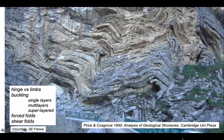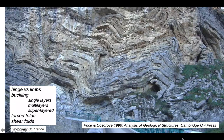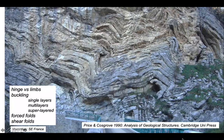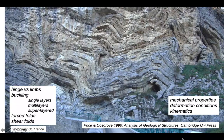So we've explored how layers can fold, contrasting deformation between hinges and limbs. And we've spent a bit of time looking at buckling. Buckling in single layers, in multi-layers and in super-layered successions. We've also seen that folding can occur not simply as a consequence of buckling, but also by other processes, forced folds and shear folds. These behaviors betray the mechanical properties of the rocks during the deformation. They tell us something about the conditions of the deformation. And we can also deduce the kinematics. All important in deducing tectonic evolution for a region.